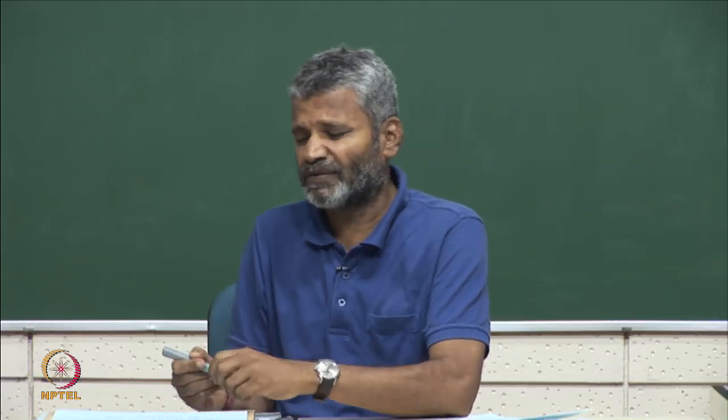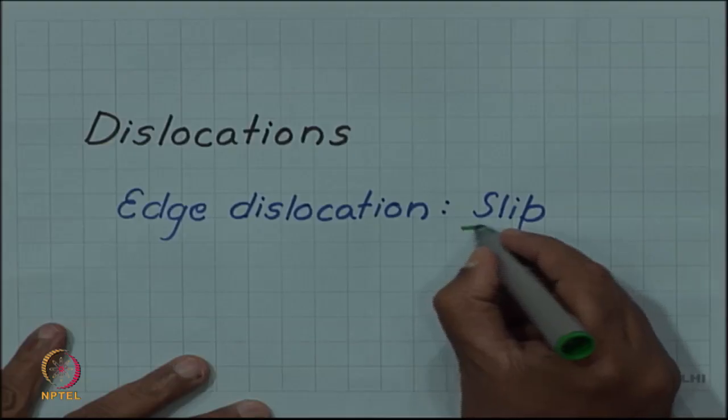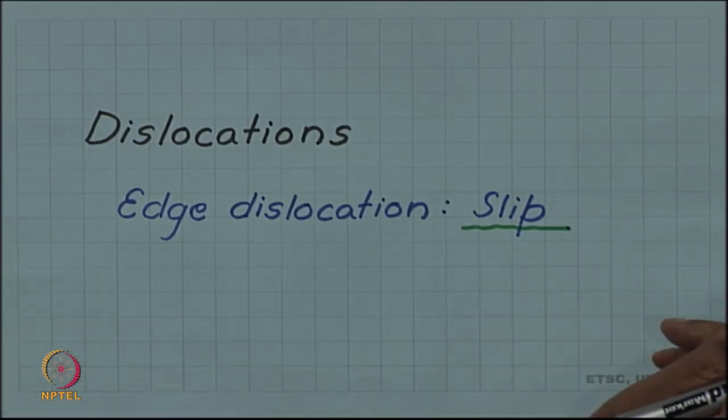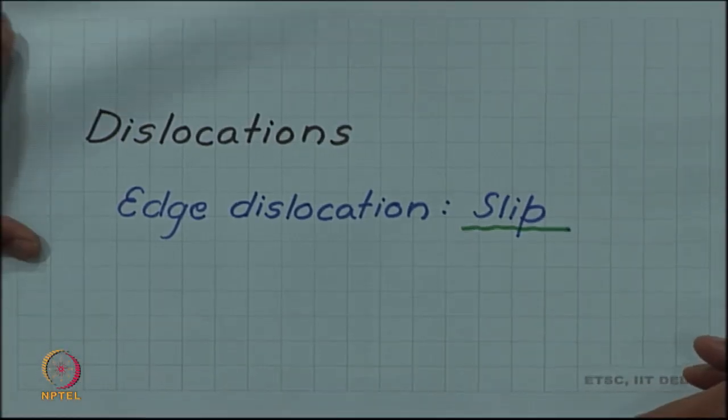We have looked at dislocation, edge dislocation in particular in the last video, and we looked at it as the bottom edge of the extra half plane. That is one way of looking at edge dislocation. There is another way of looking at dislocations in general, and that is the slip approach. We will look at the slip approach of the edge dislocation in this video.